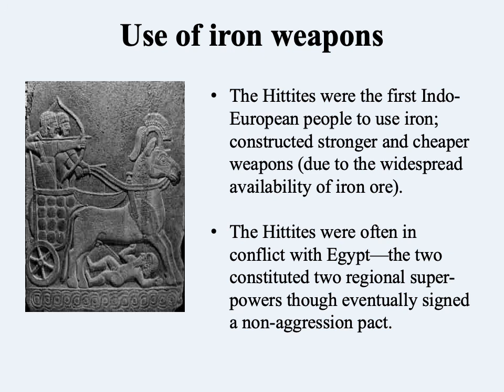To summarize, Egypt and the Hittites were kind of the two superpowers of their day. Much like what happened in the 20th century with the United States and Soviet Union, they eventually defined respective spheres of influence that allowed them to peacefully coexist — even if it was a relatively cold peace — such that the previously referred to peace treaty might be better characterized as a non-aggression pact.